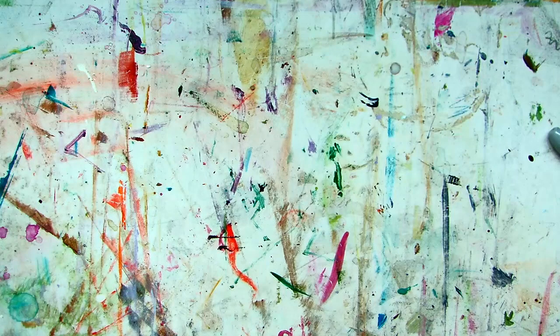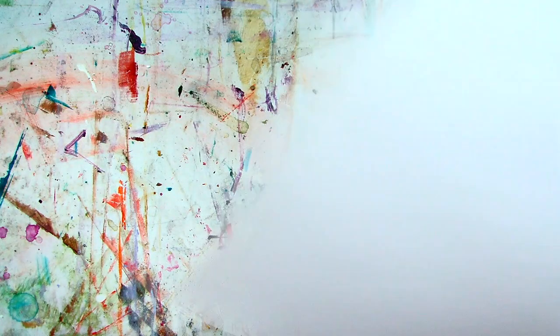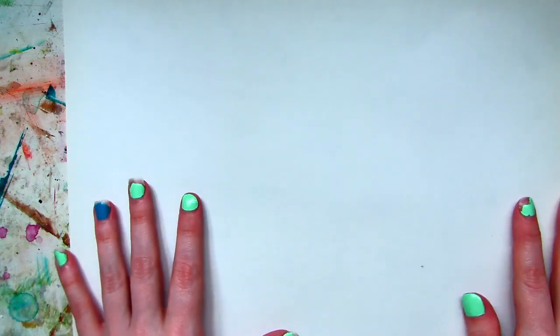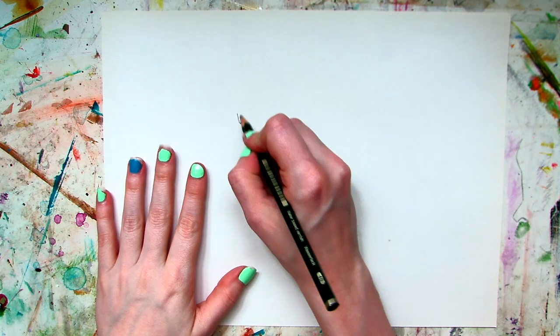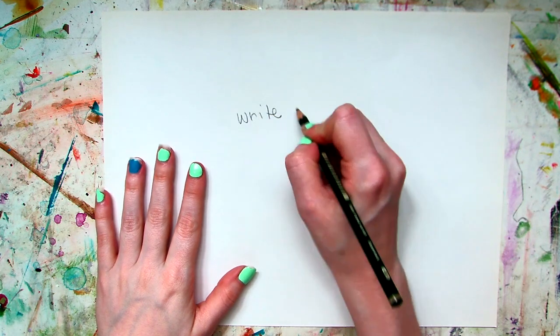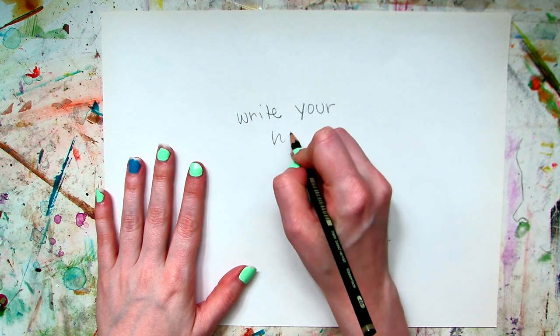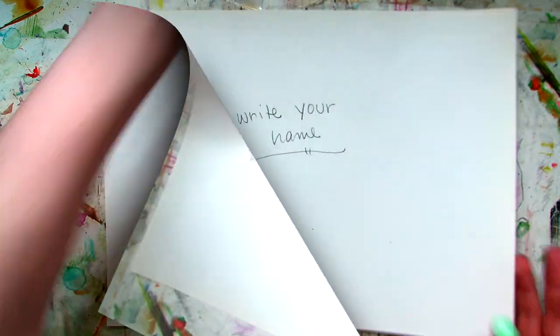Now, the first thing you're going to do is you're going to take that 9 by 12 sheet of paper, and you're going to do the same thing you always do when you get your paper for the very first time. You're going to write your name.